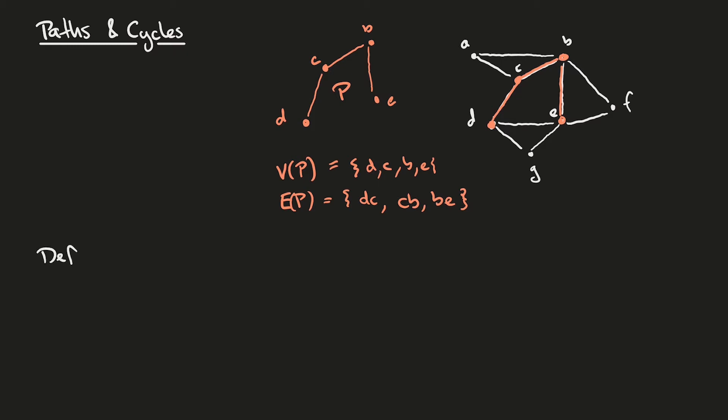Formally, we define a path in the following way. We say that a path graph is a non-empty graph P, which has some vertices and edges and is of the form: our vertex set contains vertices x0, x1, and so on up to xk.